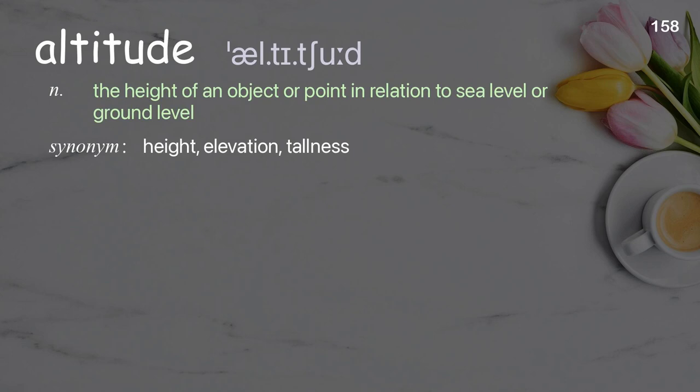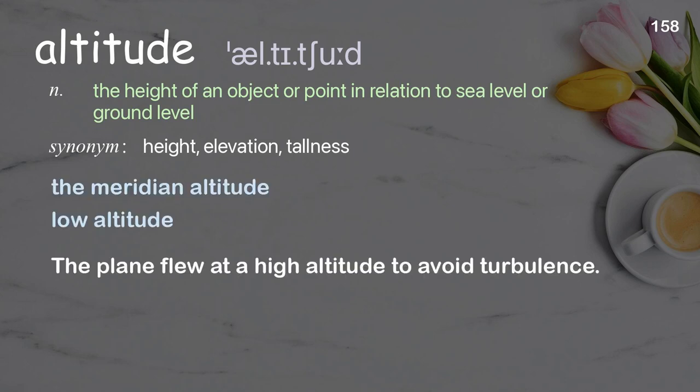Altitude: the height of an object or point in relation to sea level or ground level. Examples: the meridian altitude, low altitude. The plane flew at a high altitude to avoid turbulence.